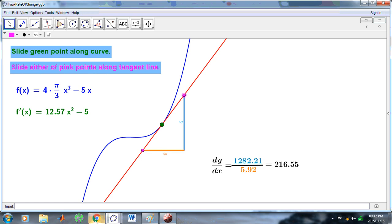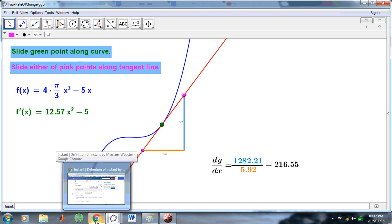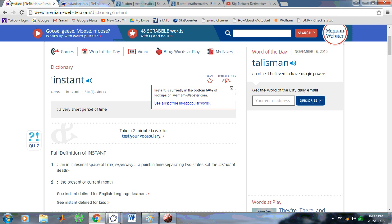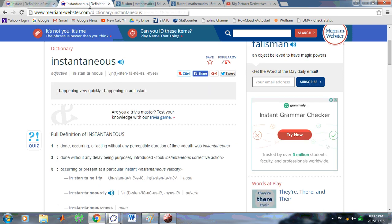There are so many ridiculous concepts in mainstream mathematics. Let's look at the definition of instantaneous. Happening very quickly. Happening in an instant. It's got three particular definitions. Done, occurring or acting without any perceptible duration of time. Done without any delay. And occurring or present at a particular instant, such as in instantaneous velocity.